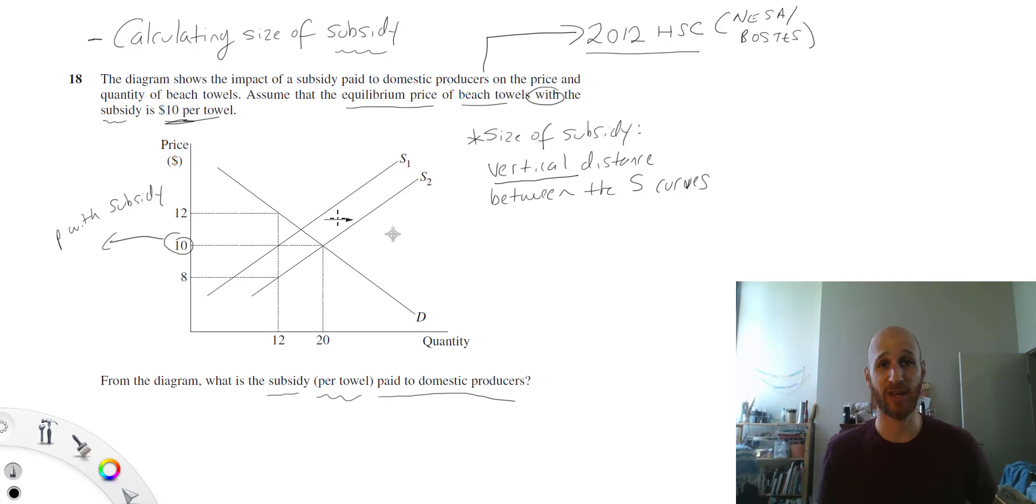Let me tell you how I calculate these types of questions. What I'm looking for is the vertical distance between these two curves. That will give me the size of the subsidy. So what I do is I pick a quantity.